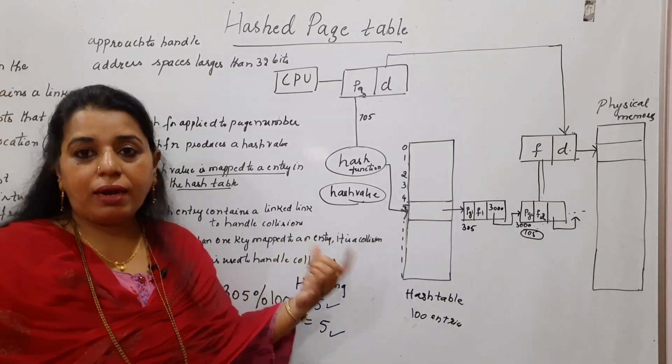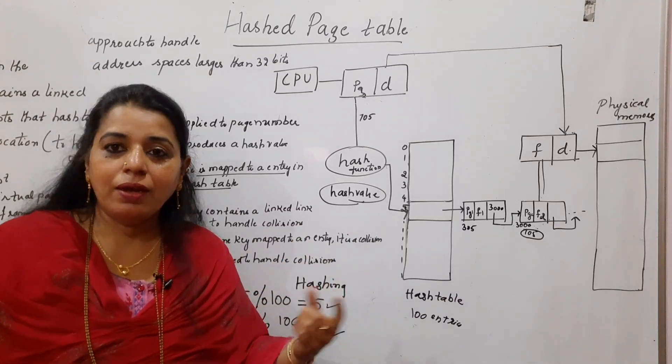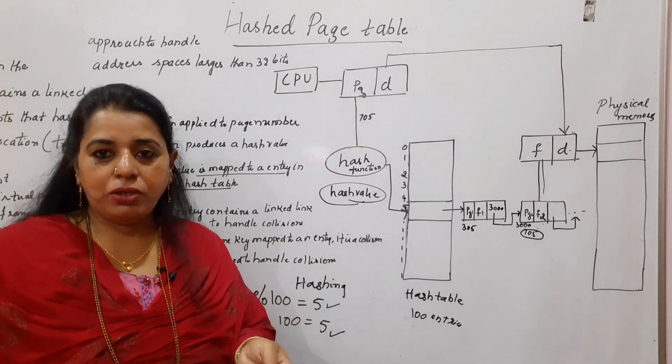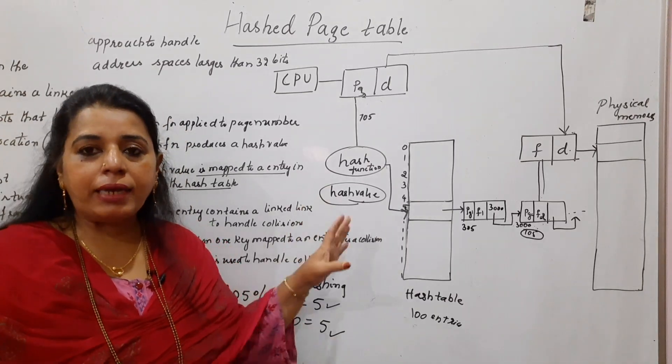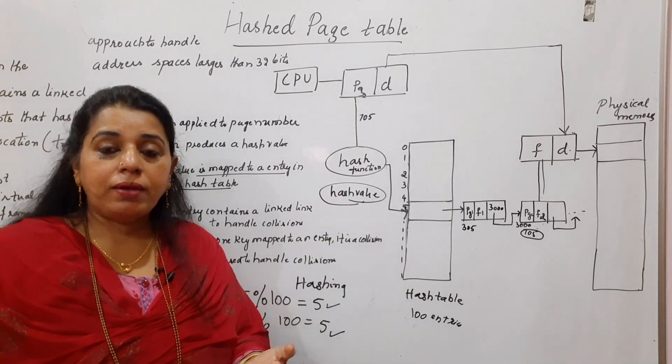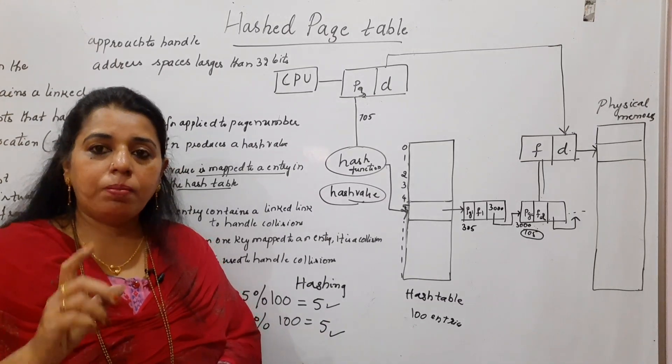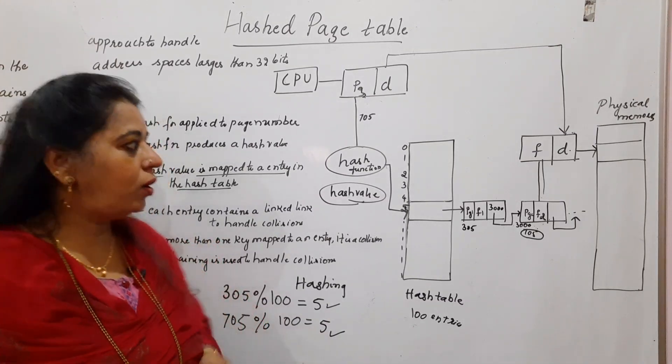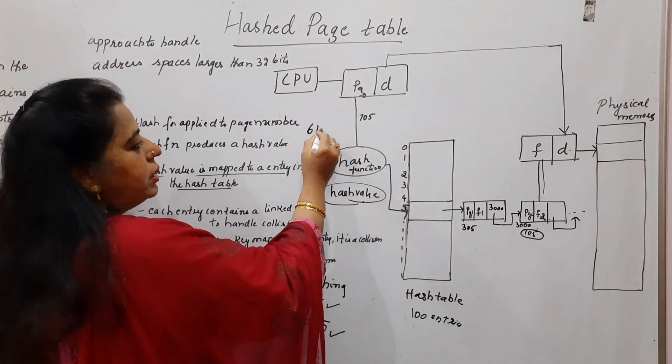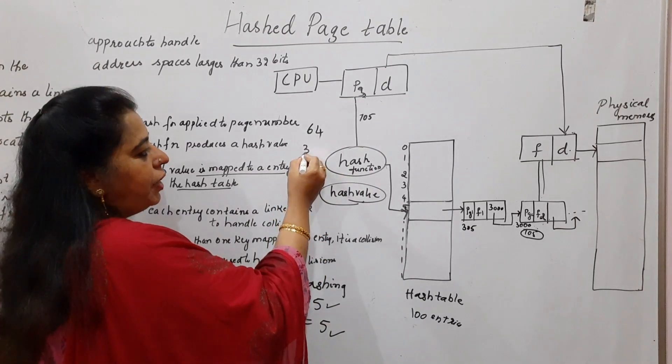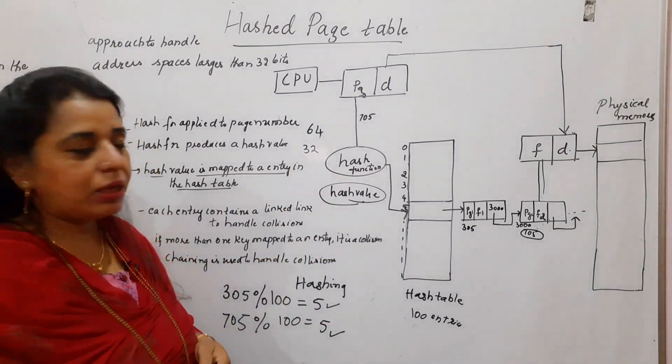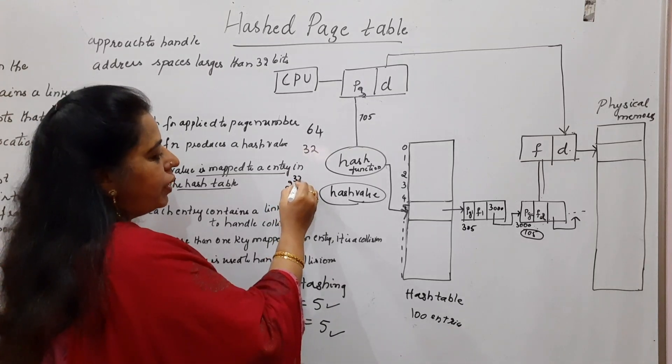So this is the advantage of hashing technique over the other. Ultimately, our main job is to reduce the access time also, because hash page tables are used when the logical address, the number of bits that are used to represent a logical address is 64.